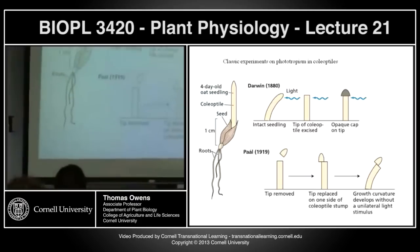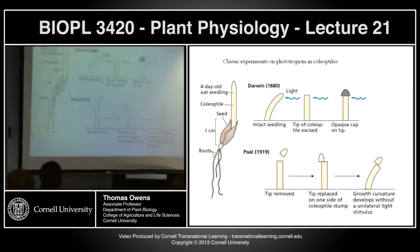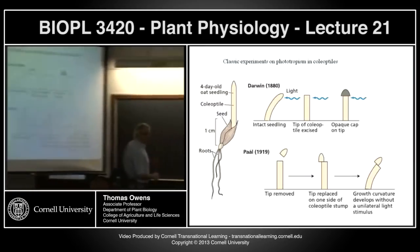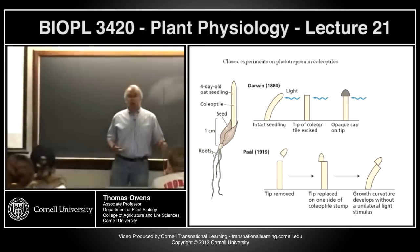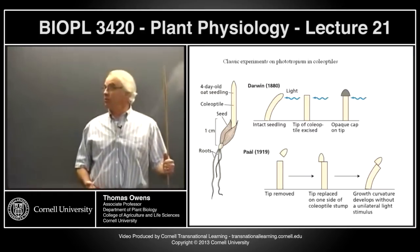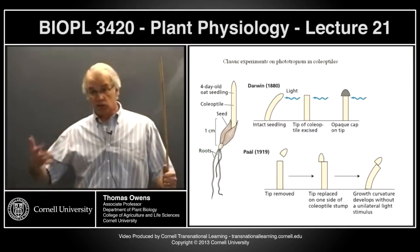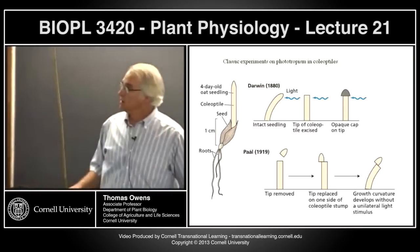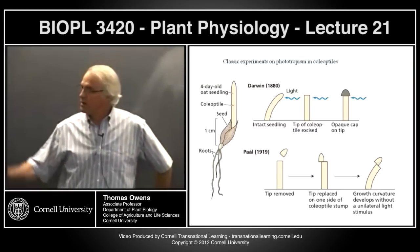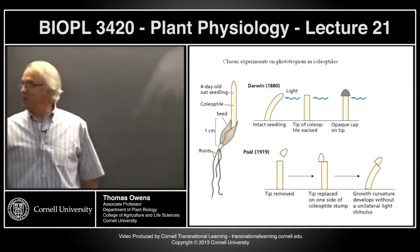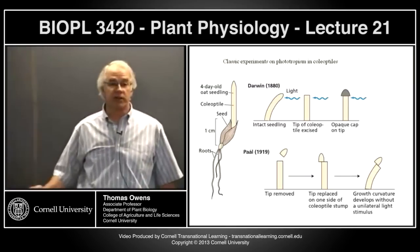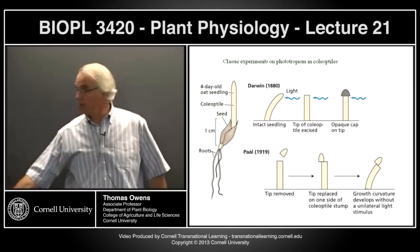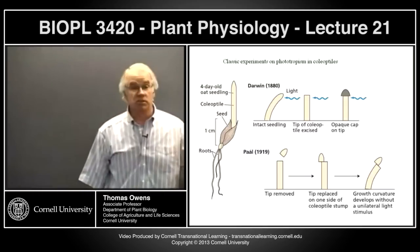What Darwin suggested was there must be some mobile signal moving from the tip to the growing region, carrying information about the light gradient—which side is sunny and which side is shady—to bring about differential growth and bending. Experiments removing the coleoptile tip and placing it on one side showed that whichever side you put the tip on is the side that bends the most. This suggests there's asymmetry in that mobile signal, with more of it going down the bending side.